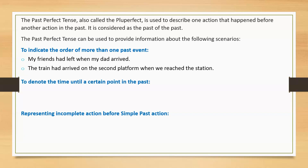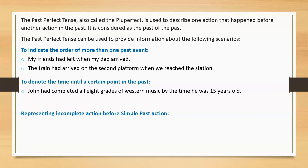Now look at sentences denoting the time until a certain point in the past. John had completed all eight grades of Western music by the time he was 15 years old. Had John and Zara arrived when I called you yesterday?